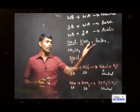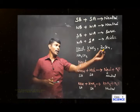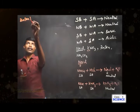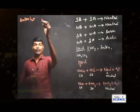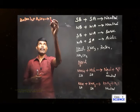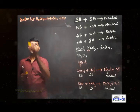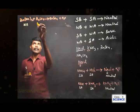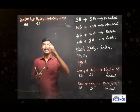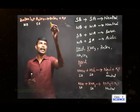Next, zinc sulfate ZnSO₄: zinc is the cationic part, obtained from zinc hydroxide Zn(OH)₂, and sulfate comes from sulfuric acid H₂SO₄. So Zn(OH)₂ + H₂SO₄ → ZnSO₄ + H₂O. Zinc hydroxide is a weak base and sulfuric acid is a strong acid. When a weak base reacts with a strong acid, the strong acid dominates — so the salt will be acidic.